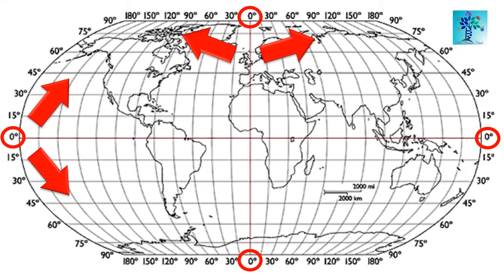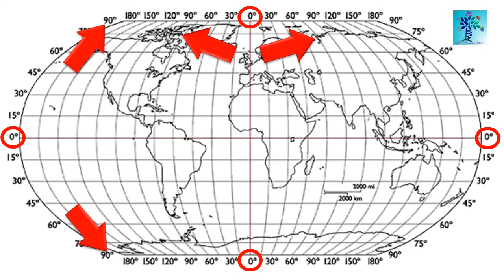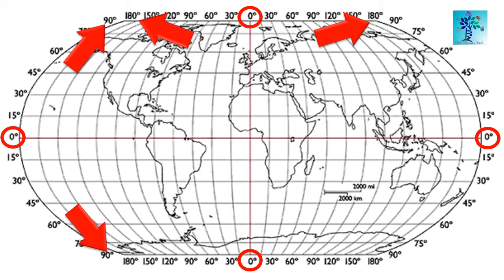So that means from equator, that is 0 degree, to south pole 90 degree and north pole 90 degree. The prime meridian 0 degree to east 180 degree and west 180 degree.